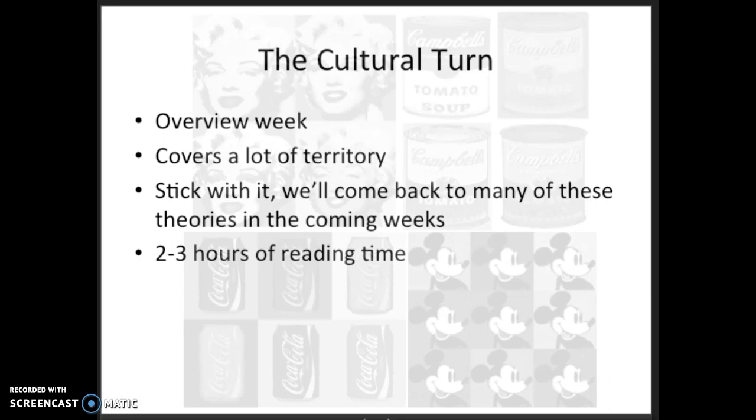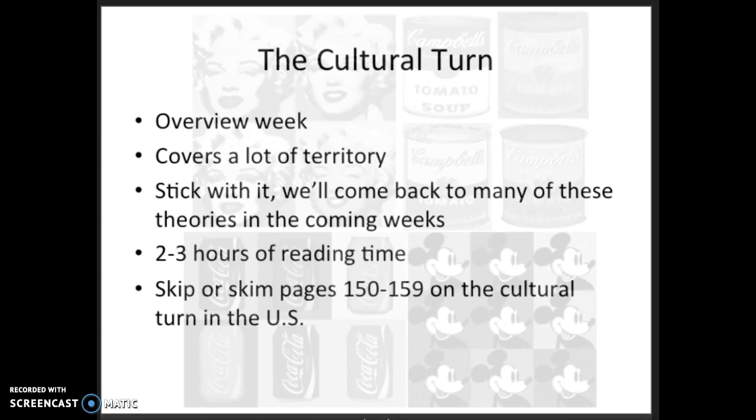The chapter should take two to three hours if you read it quite carefully. I'm going to suggest that you skip or skim pages 150 to 159 where Barron and Davis discuss the cultural turn in the United States. That section will take you in a pretty different direction and away from the theories we'll be covering in this course.